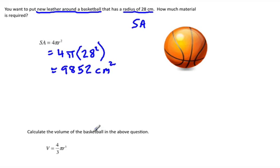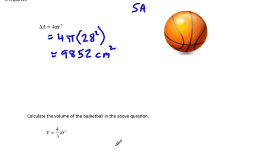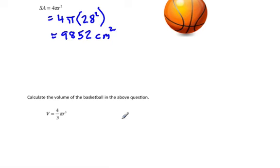For the next question, number eight, what we're asked to find is calculate the volume of the basketball. The formula for volume is 4/3 πr³, and so again we're just going to substitute into the equation. So it's going to be 4/3 times π times 28 cubed.